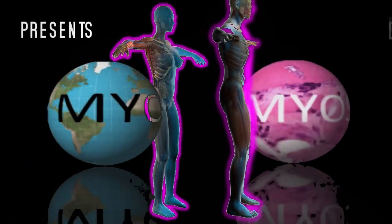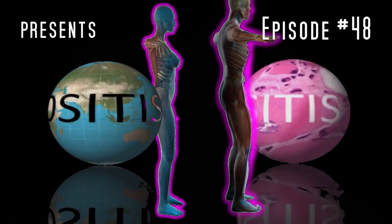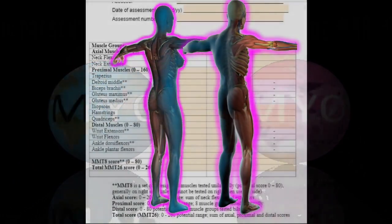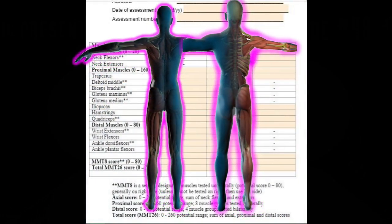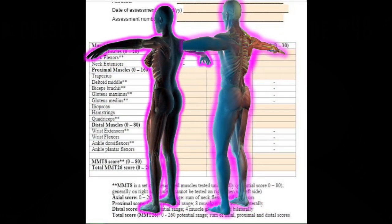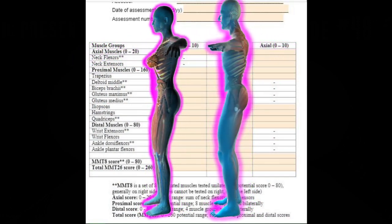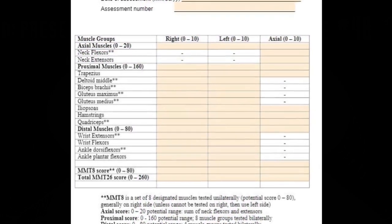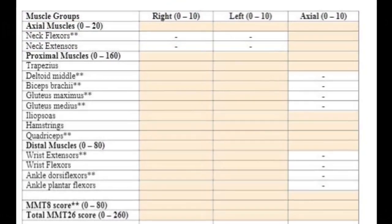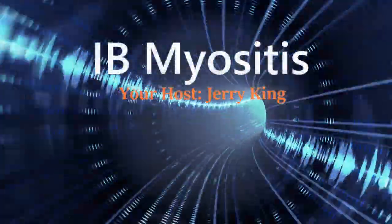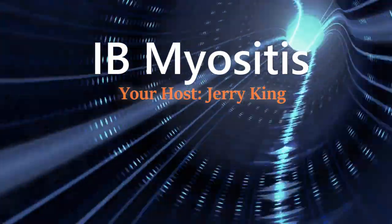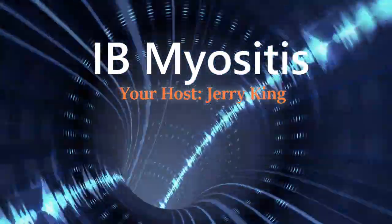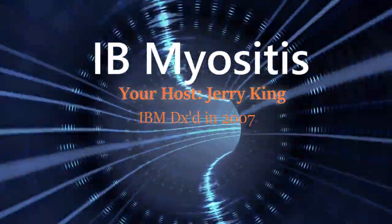Anyone diagnosed with Inclusion Body Myositis will most likely have had a manual muscle test administered by a doctor or physical therapist. You may also have noticed they jot down a number on their chart for each segment of their evaluation. In this video, we will identify what those numeric entries mean. Hi, Jerry here again for my IB Myositis viewers, a channel dedicated to anyone caring to learn about the disease called Inclusion Body Myositis, or IBM.